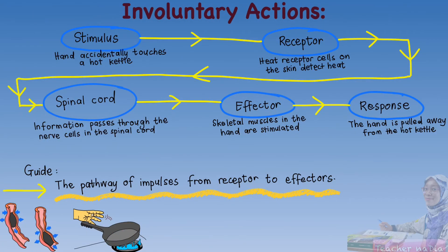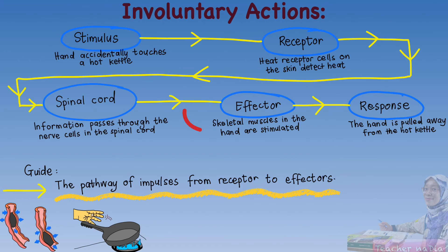This is the pathway of impulses for involuntary actions. The stimulus is when the hand accidentally touches a hot kettle, and the impulse is sent to the receptor where the heat receptor cells on the skin detect heat. The information then passes through the nerve cells in the spinal cord, causing the skeletal muscle in the hand to be stimulated, and the response is the hand being pulled away from the hot kettle.